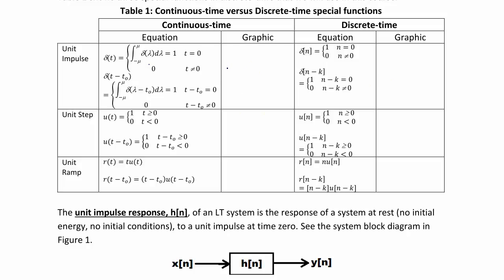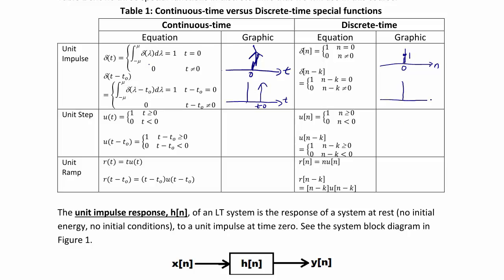If we draw a quick sketch in continuous time, we have the t-axis and indicate this as an arrow at 0, showing it's undefined at 0 but the integral over it has an area of 1. For the shifted impulse, we show the arrow at t-naught. In discrete time, it is actually defined — at n equals 0 it's a lollipop with an amplitude of 1, or for a shifted version, at k with an amplitude of 1.